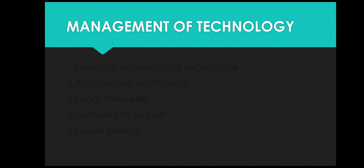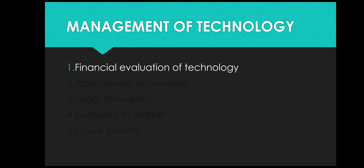The decision-making process in selection of appropriate technology, or Management of Technology, has the following elements. The first one is financial evaluation of technology. The adoption of technology requires its financial evaluation, that is its cost and benefit analysis. The firm has to incur huge expenditure on installation of technology, and the benefit or income on that is expected to be received over a number of years.